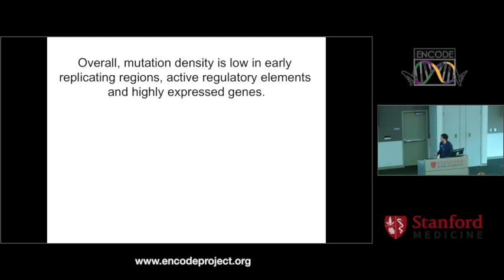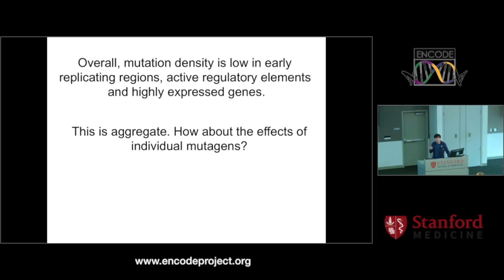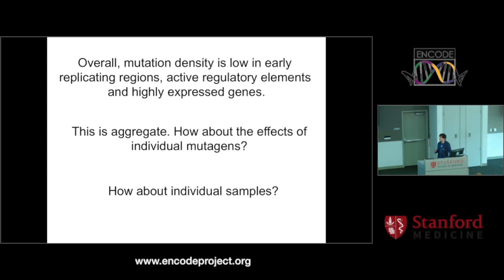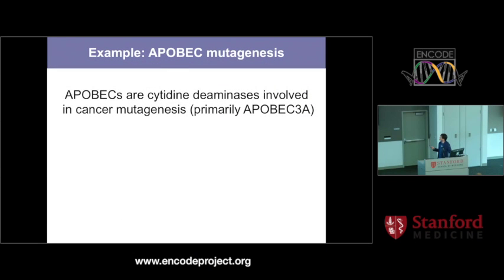Moving on to newer work: overall mutation density is low in early replicating regions, active regulatory elements, and highly expressed genes. However, this is an aggregate. What if we look at individual mutagens and mechanisms? How about individual samples? We selected APOBEC as an example because it is very well understood and can be statistically detected. I'll go through this quickly. When we think about cancer mutagenesis, we usually think about exogenous factors — smoking, UV, certain carcinogens. APOBEC is our own human protein.